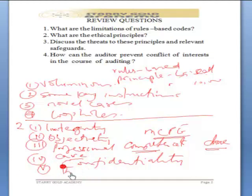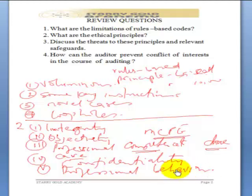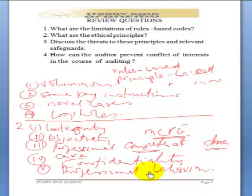Then finally, number five — professional behavior. The auditor must not do anything that can bring him, her, the institute, or the profession into disrepute. Always act as a gentleman or gentlewoman, guided by ethical principles. So those are the five ethical principles that an auditor is expected to be guided by.